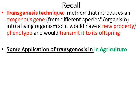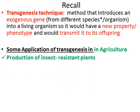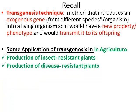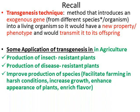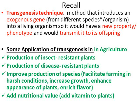Some applications of transgenesis in agriculture: we produce plants that are resistant to insects and resistant to certain diseases. We can improve production of a certain species — for example, we can facilitate farming in harsh conditions, in certain types of soil and weather, and we can increase the growth of a plant. We can enhance the appearance and flavor of plants. It is also used to add nutritive values to plants, such as adding certain vitamins. We can even create plants that have vaccines inside them — we call them edible vaccines.